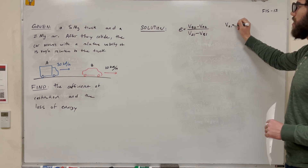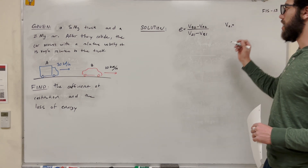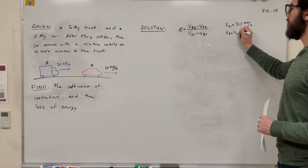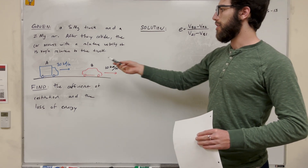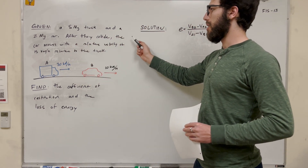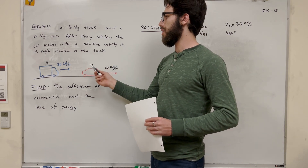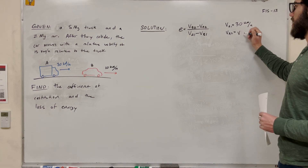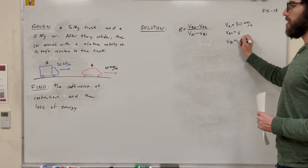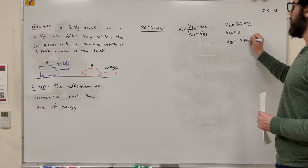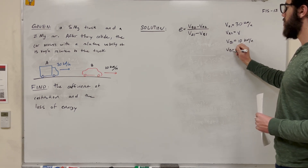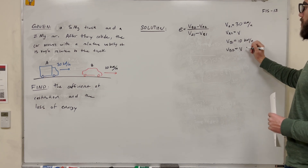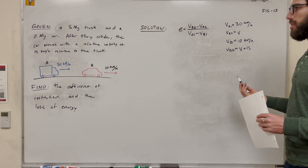So velocity A1 — that's the initial velocity of A — is 30 kilometers an hour. Velocity A2, that's after they collide, so that's the truck. We know the car is going to move with a relative velocity of 15 kilometers an hour quicker than the truck. We don't know what this velocity is, so let's set it equal to B. So velocity B1 is 10 kilometers an hour. Then velocity B2 is going to be 15 kilometers an hour quicker than the truck, so that's going to be B plus 15.